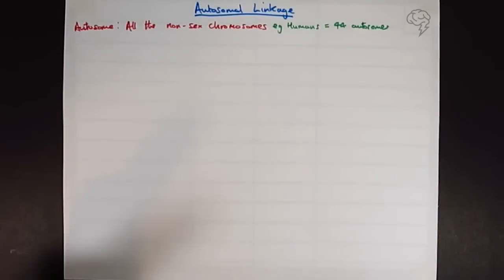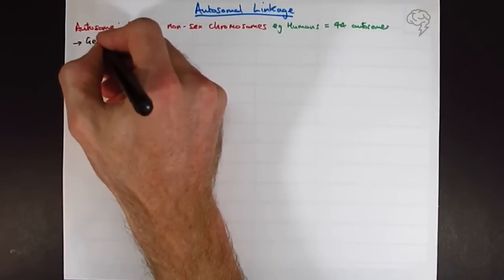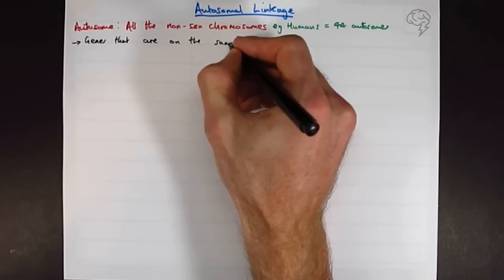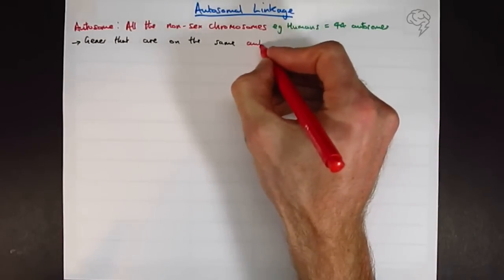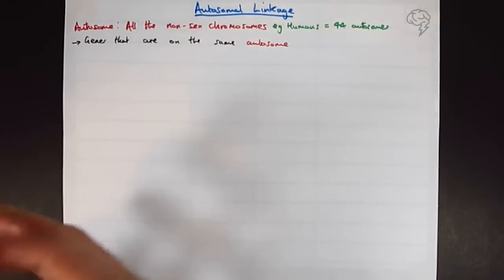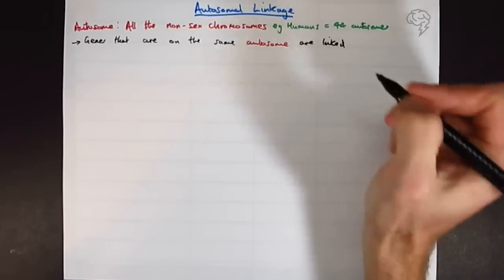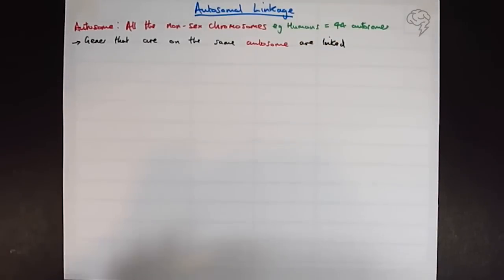So that's all that it means. Autosomal linkage is basically when you have genes that are on the same chromosome, or what I'm going to call them here as an autosome. So genes that are on the same autosome are linked.